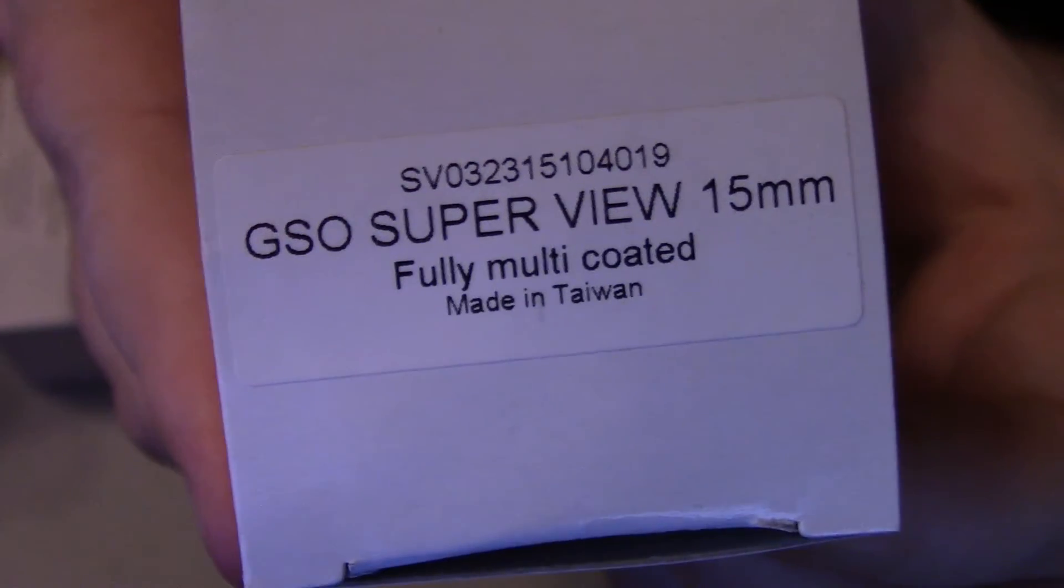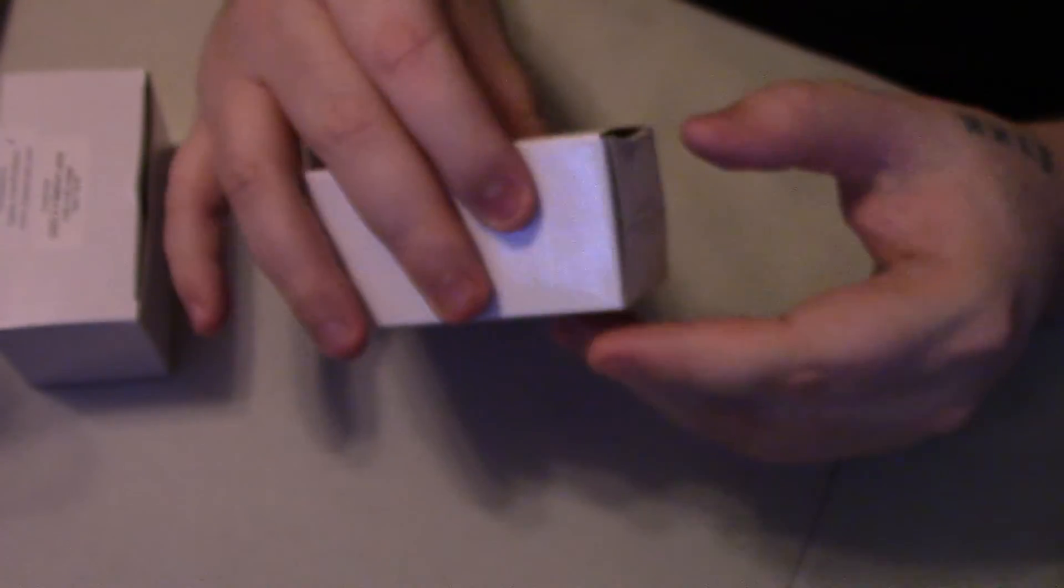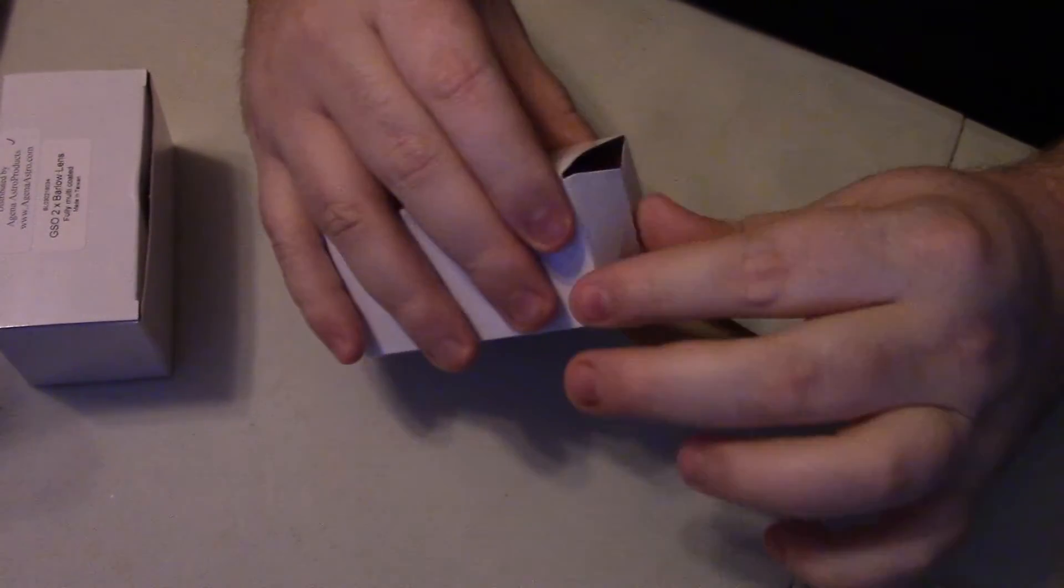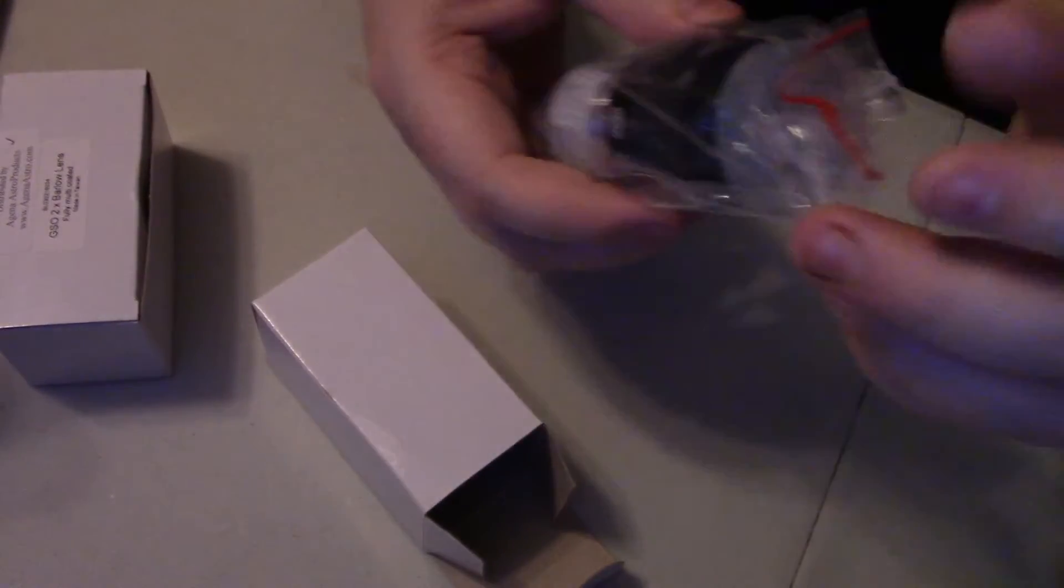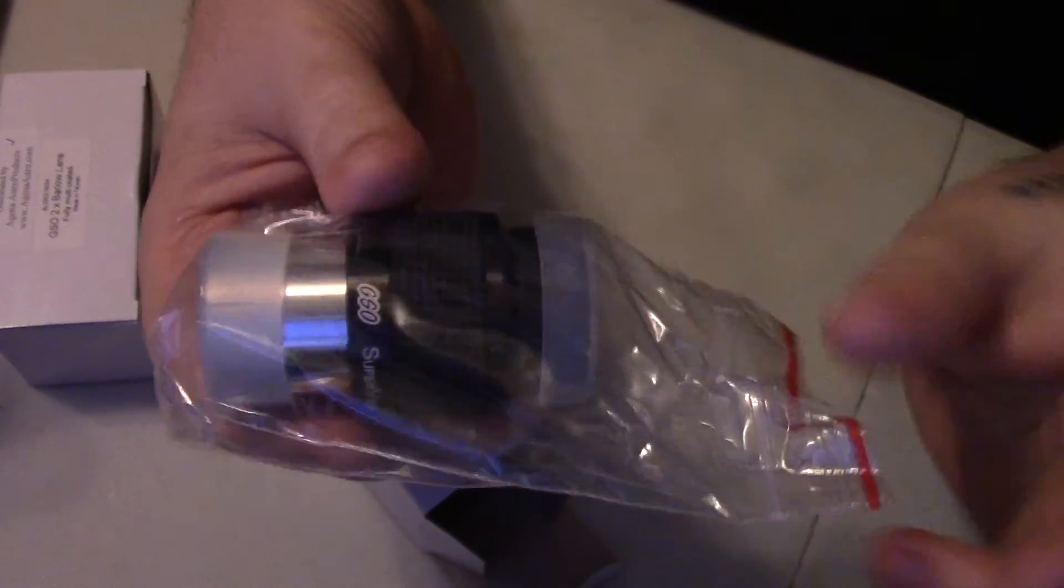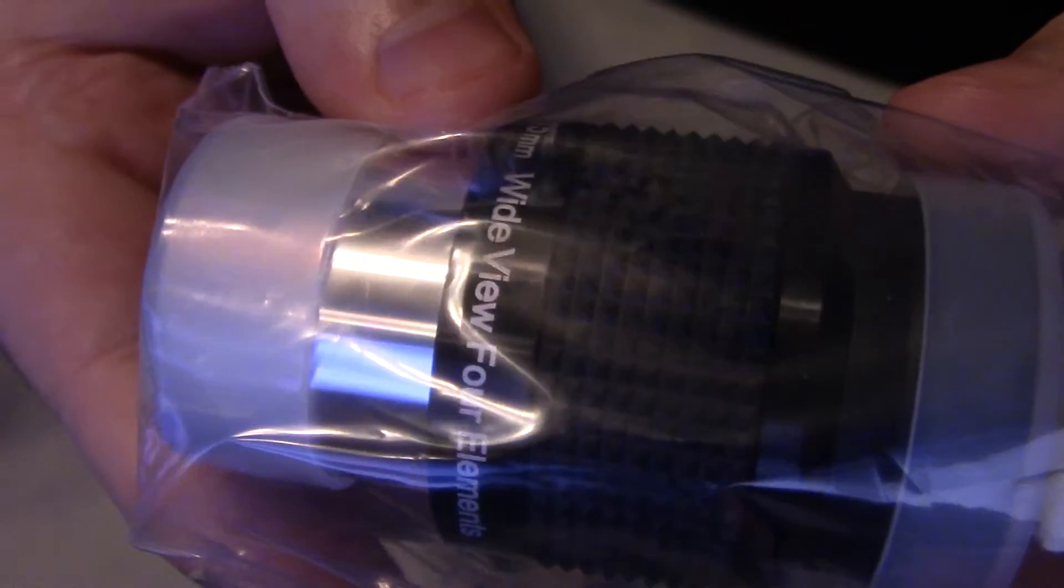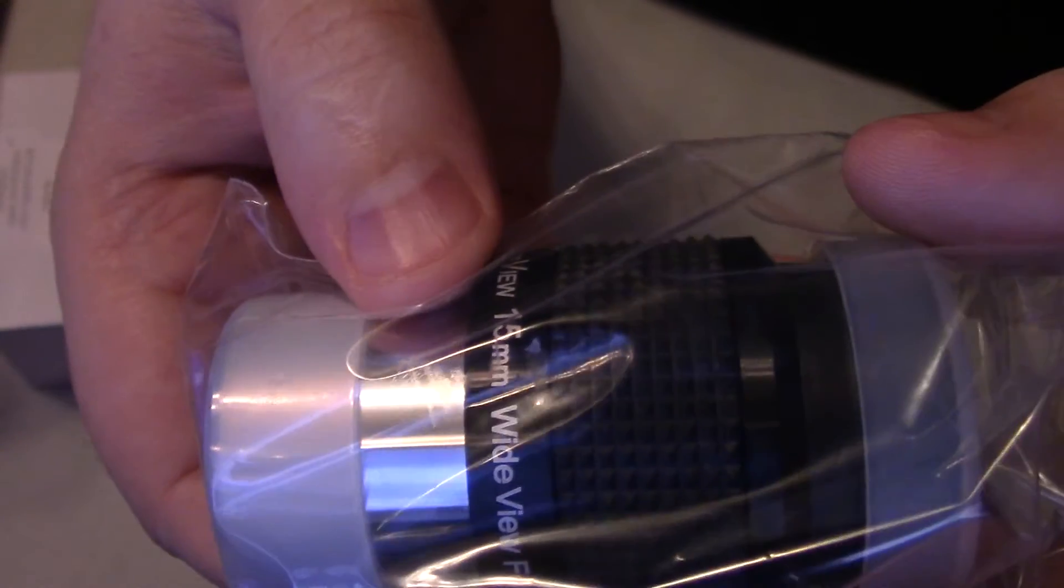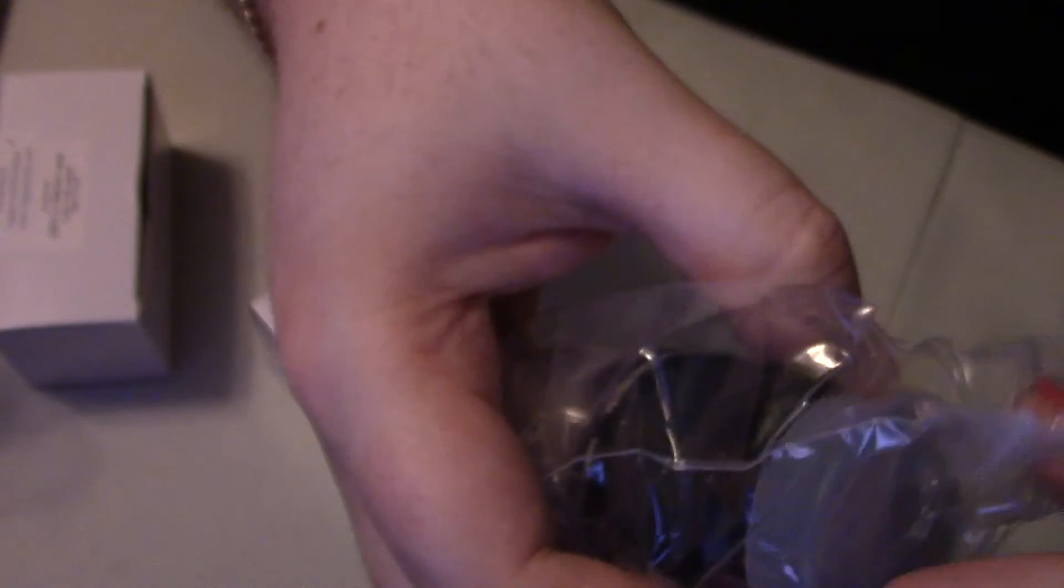This here is the GSO SuperView 15mm eyepiece. I'll give you guys a view of what this eyepiece looks like. Here's a close up of the eyepiece. Again it's a 15mm wide SuperView eyepiece. It's a lot better with less strain on your eye from having to look into a small eyepiece.